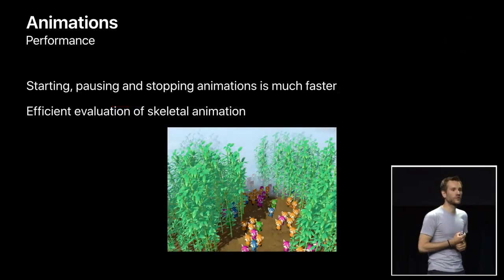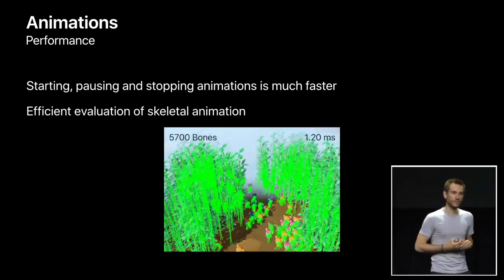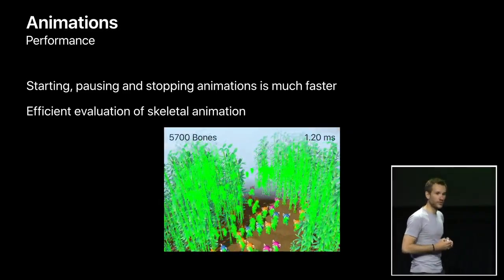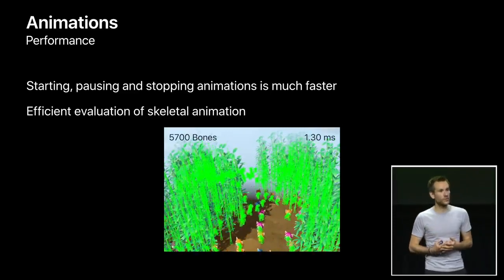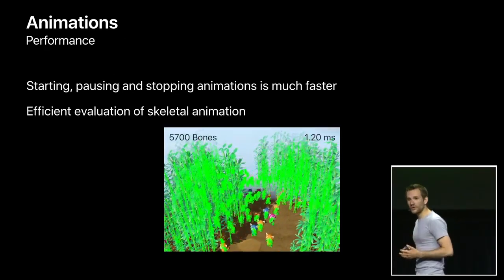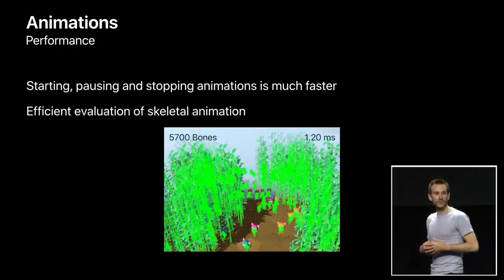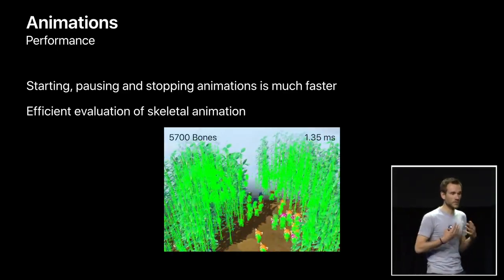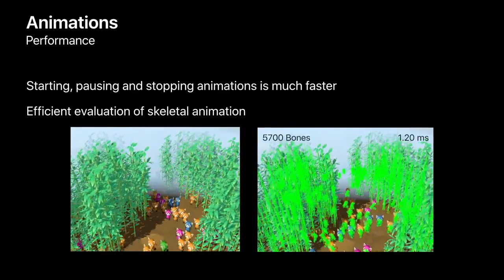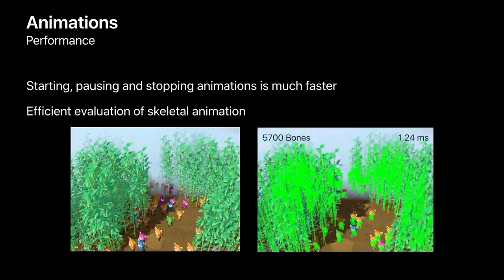Let me mention enhancements to our animation evaluation code. We have a new implementation that makes it faster to start animations on arbitrary objects in the scene, and we made the evaluation of skeletal animation much more performant. If you have a lot of characters with a lot of bones in your scene, such as in the Fox demo you just saw, this new implementation makes things much faster. And with that, I hand over to Sebastian for updates on our developer tools.